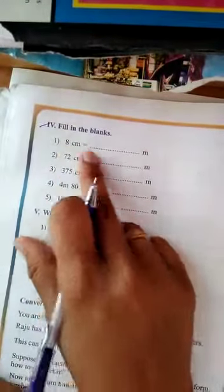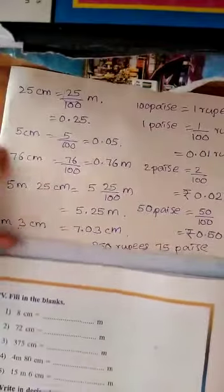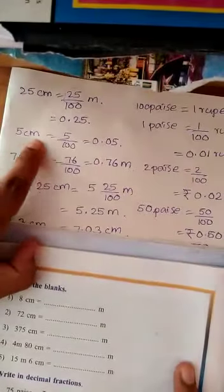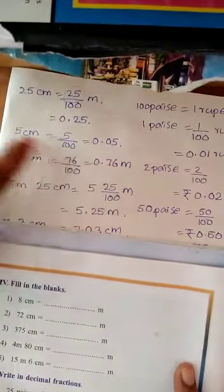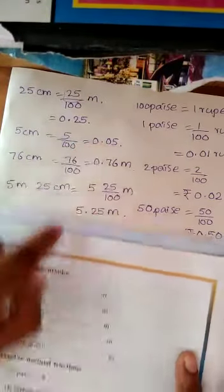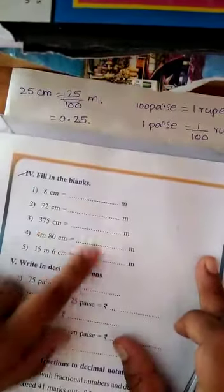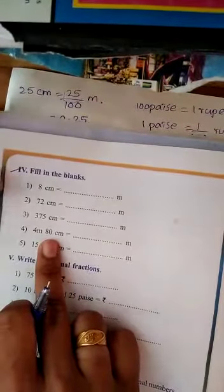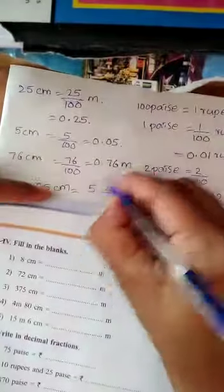Similarly 8 cm: 1 cm equals 1/100 m. 5 cm is 0.05 cm. Then 8 cm is 8/100, which is 0.08 m. Like that, remaining do it as homework. 4 meter 18 cm is 4.18. Similarly paisa also, do it as homework.